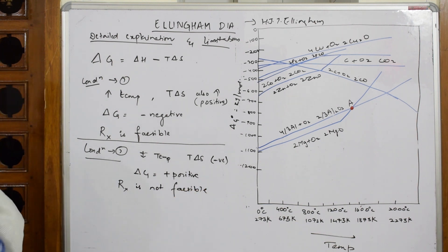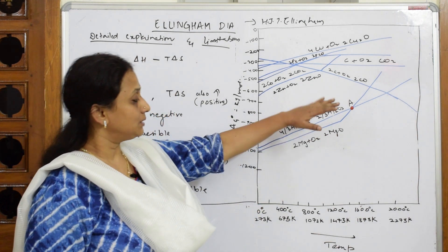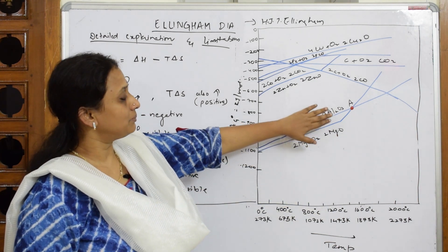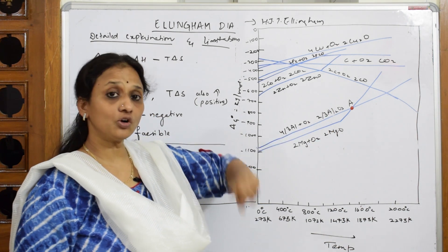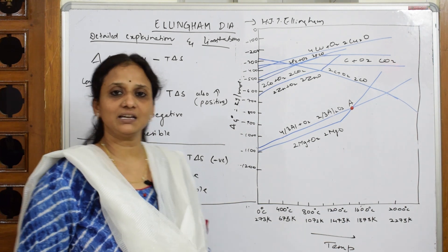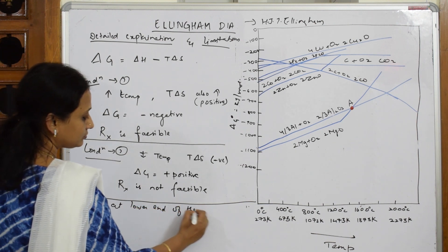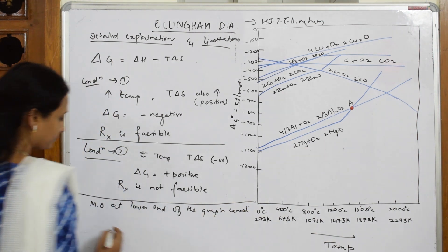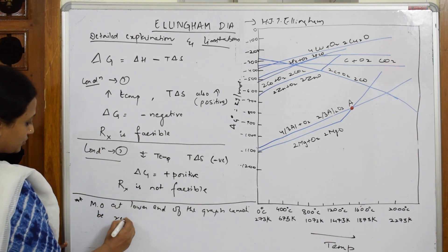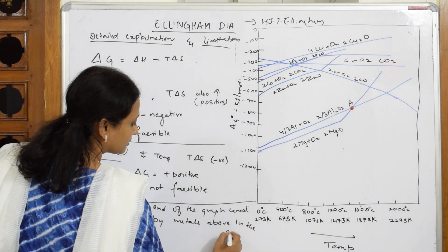One more important thing to remember: looking at the graph, magnesium oxide and aluminium trioxide are at the lower end. Metal oxides which are at the lower end of the graph cannot be reduced by metals which are above them in the series — metals above in the graph cannot reduce these metal oxides below.